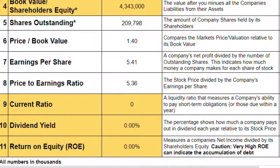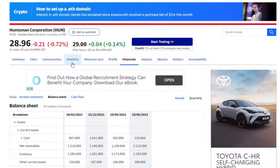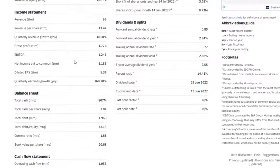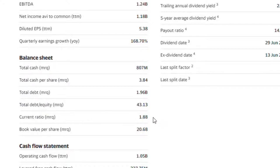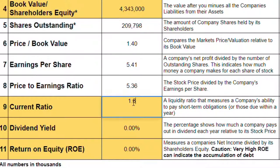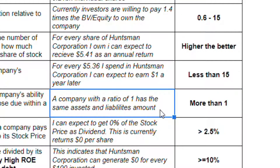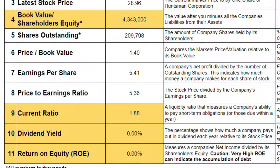Item nine is the current ratio, which measures the company's ability to pay their short-term debt obligations. We go back to Yahoo Finance and click on Statistics; scrolling down under the Balance Sheet header, the current ratio from the most recent quarter is 1.88. A ratio of one means a company can pay off all liabilities with their assets. Less than one means more short-term debt than assets, and more than one means the reverse. Huntsman's ratio of 1.88 means it can meet all short-term debt obligations and still have assets left over, passing the guideline of more than one.